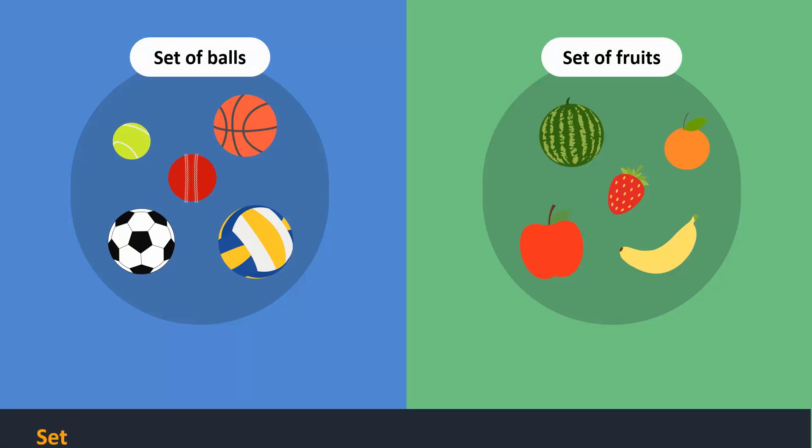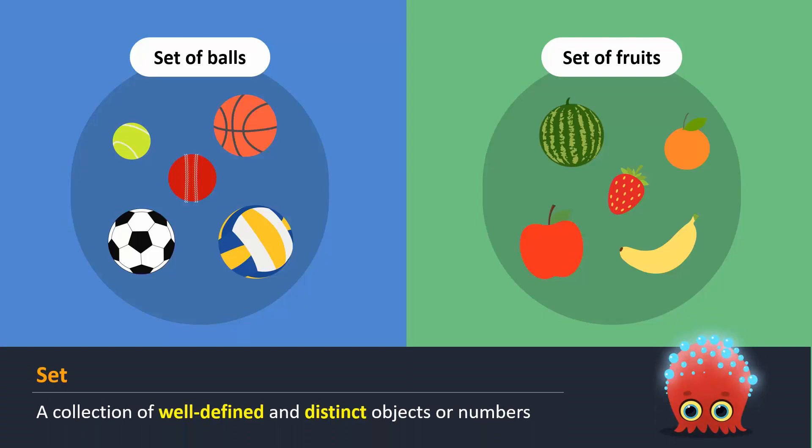A set is a collection of well-defined and distinct objects or numbers. There are two key properties in the definition. First, objects in a set must be well-defined. This means each object must have some specific properties that make it belong to the set.